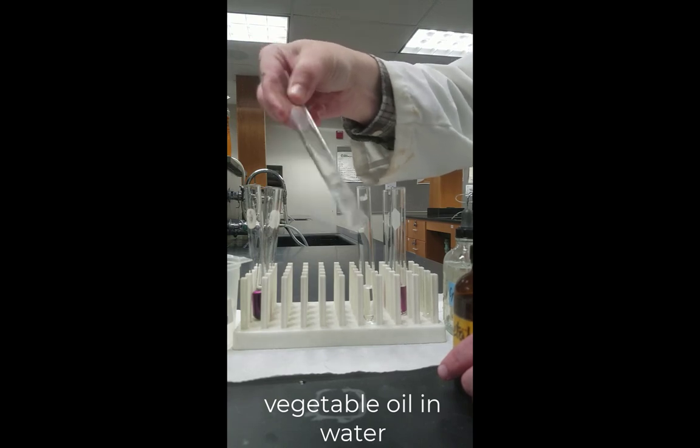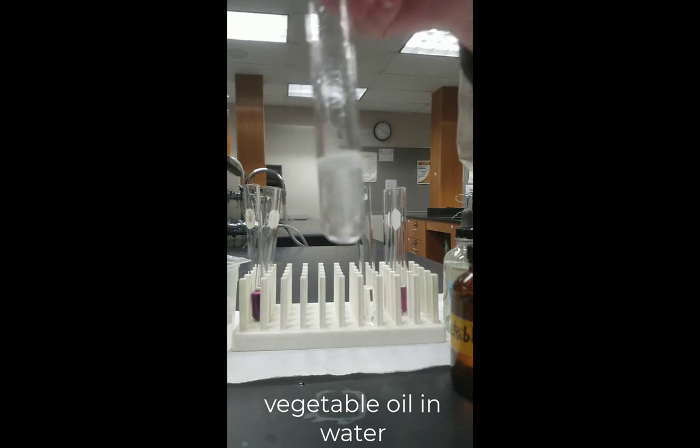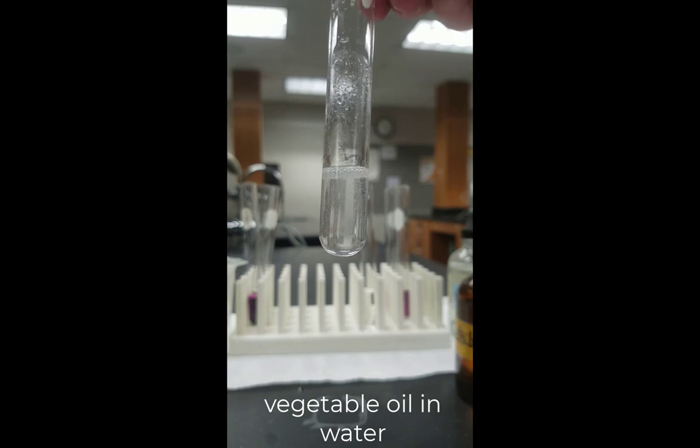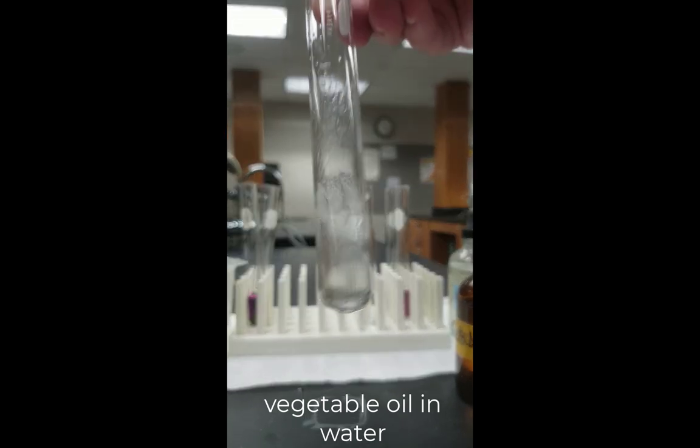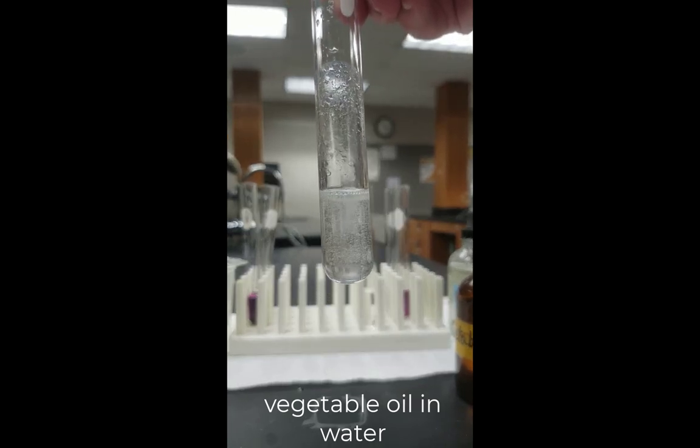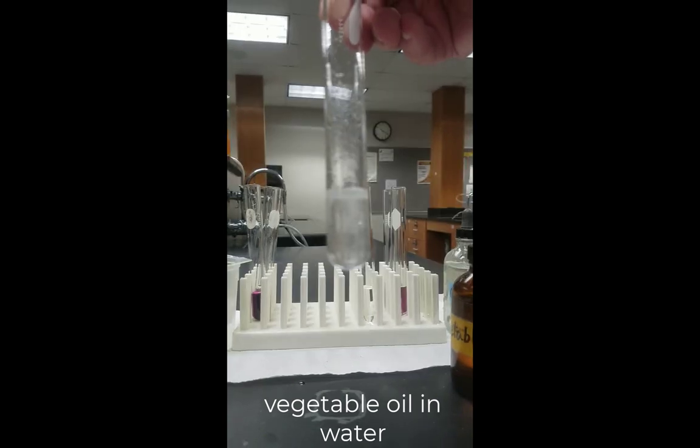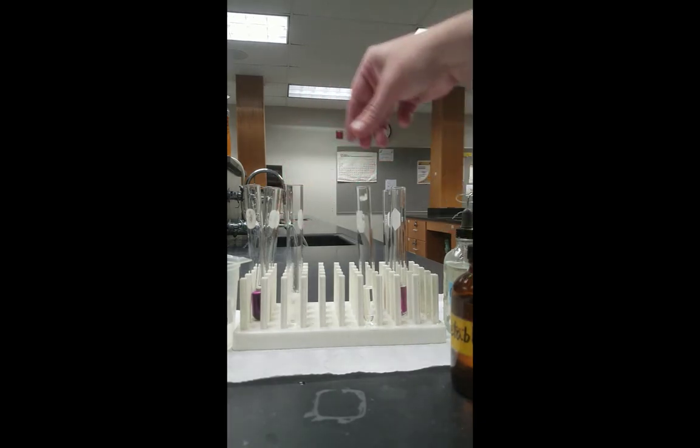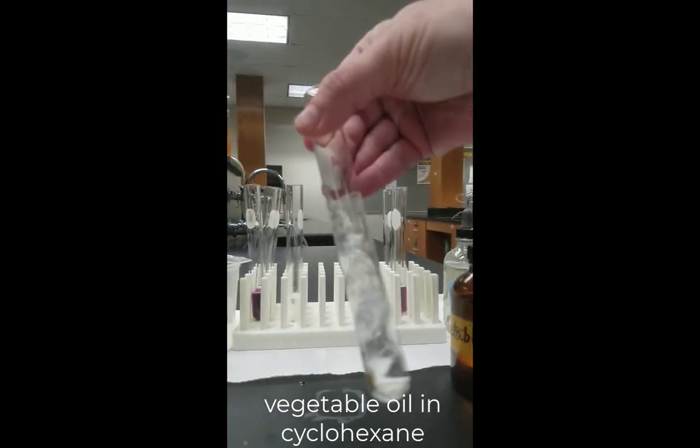So the vegetable oil in the water, you'll notice that there's lots of little bubbles. And that's the vegetable oil not mixing with the water, and it forms a layer on the top. When liquids don't mix, you will always get two different layers. The layer on the top will be the less dense of the liquid, and the layer on the bottom will be the more dense of the two liquids.